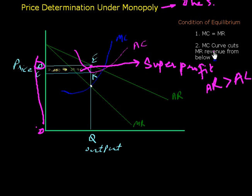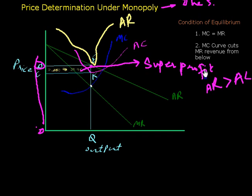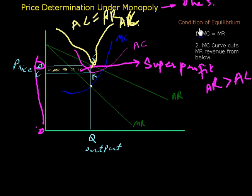There are two more situations in monopoly. Suppose if the average cost curve touches the average revenue curve, at that time the seller will get only normal profit. If average cost touches or is equal to average revenue, then average cost is equal to average revenue — that gives normal profit.